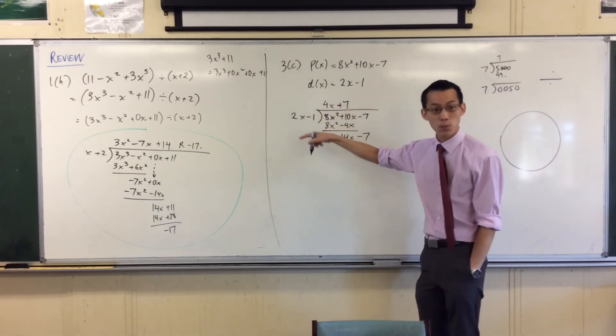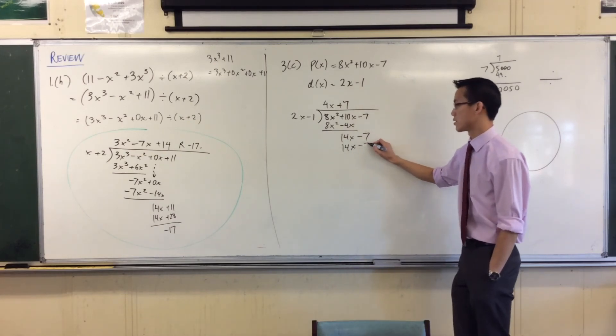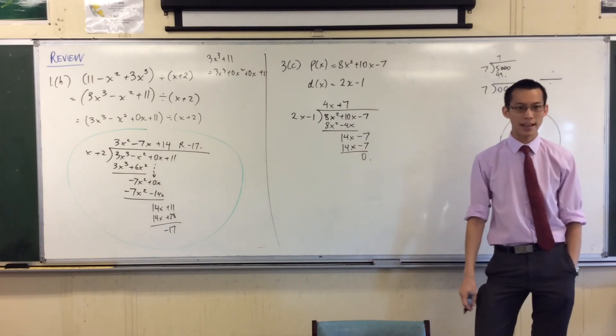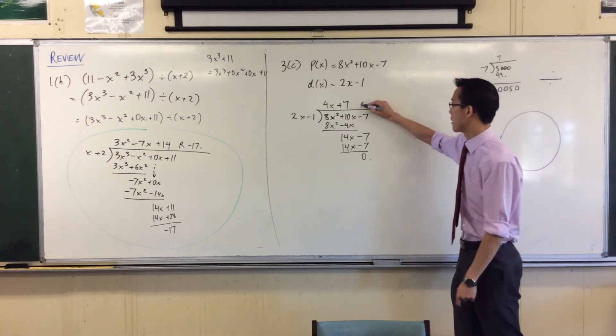I multiply back, which gives me 7 times 2x is 14x. 7 times negative 1 is negative 7. And I do my subtraction, I end up with 0. Because negative 7 take away negative 7. Anything take away itself is 0. So there's my remainder.